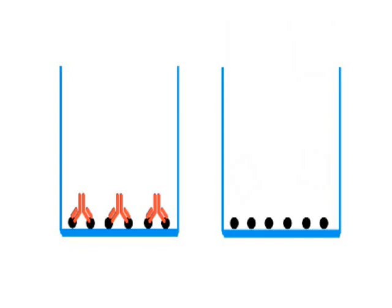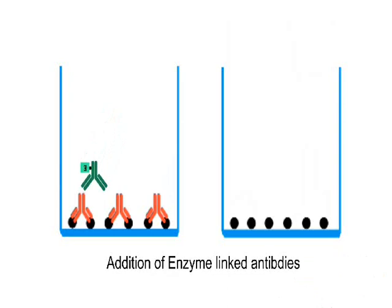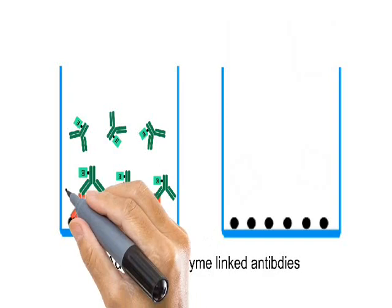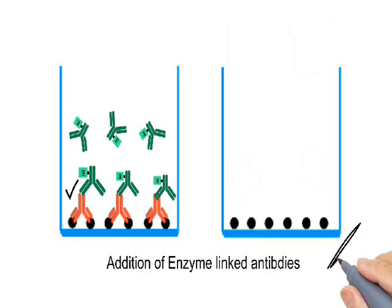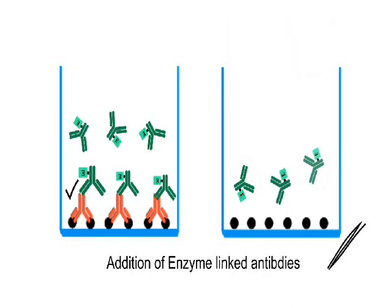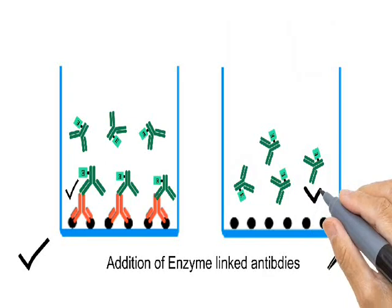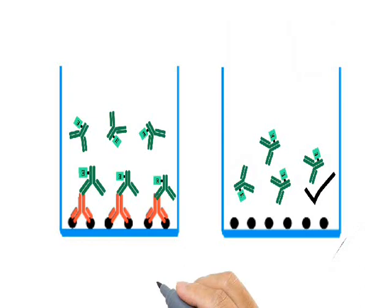After this, the main reagent of the ELISA test is added to the well: the enzyme-linked secondary antibody. As we discussed earlier, this enzyme-linked secondary antibody is specific to antibodies only — it binds to antibodies, not to antigens. So if there are antibodies present in the sample, the secondary enzyme-linked antibodies will bind to them. But if the sample does not contain the antibodies, as in the second case, there is no space to bind the secondary enzyme-linked antibodies and they will remain unbound.